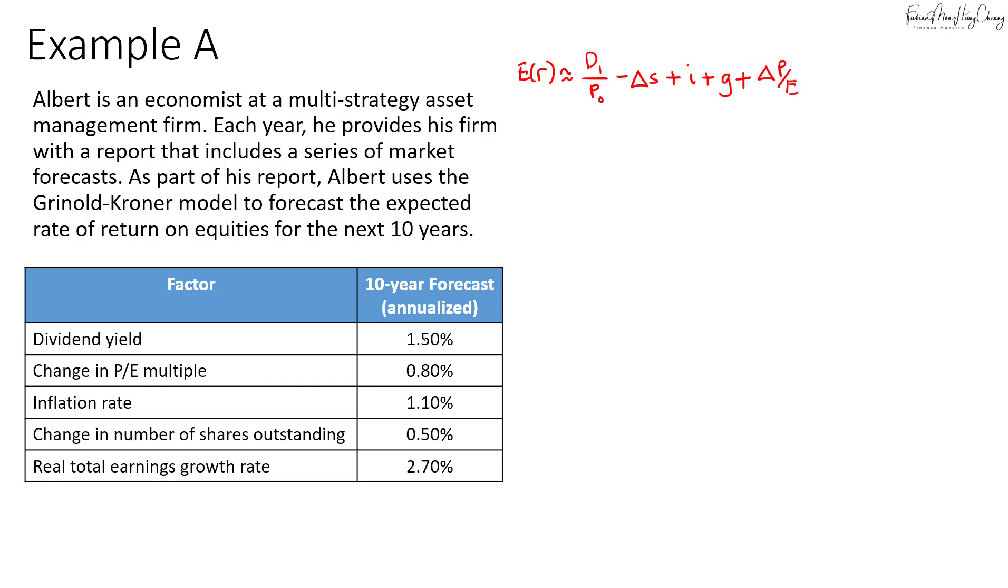In this case, the forecast dividend yield is 1.5%. Now be careful with this part. The change Delta S here is the change in the number of shares outstanding. In this case, they have issued more shares, which means there will be a dilution. So this will be negative 0.5%, a negative return to shareholders.